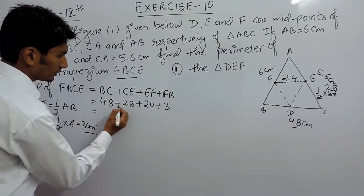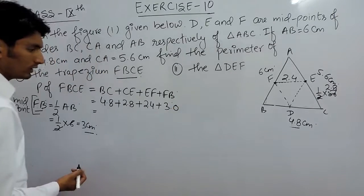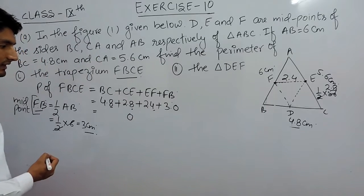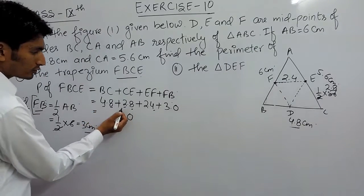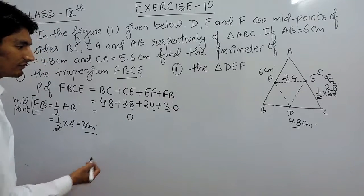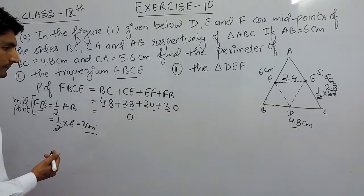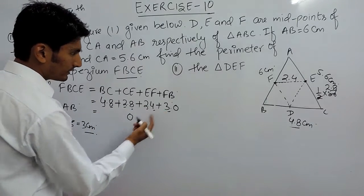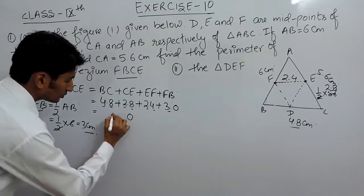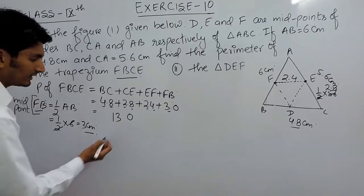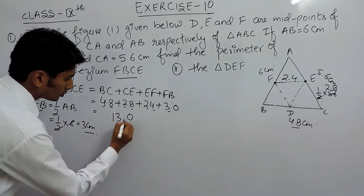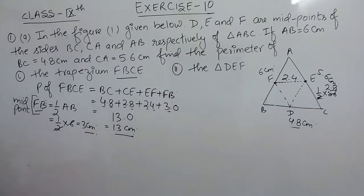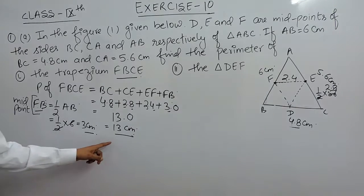Adding all sides: 4.8 + 2.8 + 2.4 + 3.0 = 13 cm. So the perimeter of trapezium FBCE is 13 cm.